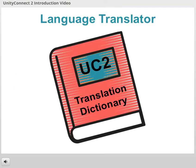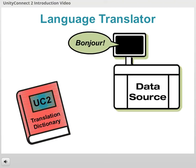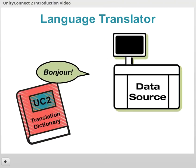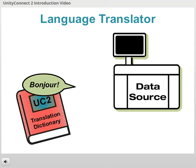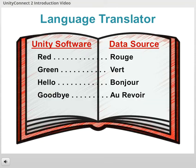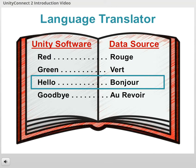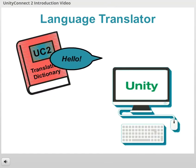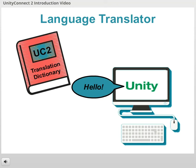Unity Connect is set up like a French to English dictionary, and acts as the translator. It receives your data in French, uses the dictionary to convert the data into English, and passes the translated data over to the Unity QC software.